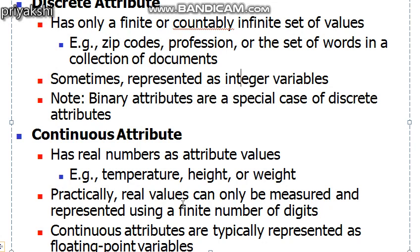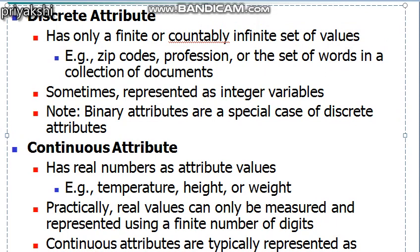Practically, real values can only be measured and represented with limited precision. From the theoretical perspective, any of the measurement scale types — nominal, ordinal, interval, and ratio — could be combined with any attribute type: binary, discrete, or continuous. However, some combinations occur only infrequently. For example, it is very difficult to think of a realistic dataset containing a continuous binary attribute. Generally, nominal and ordinal attributes are binary or discrete, while interval and ratio attributes are continuous.